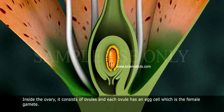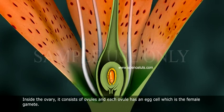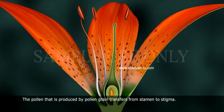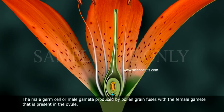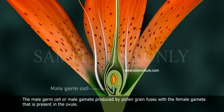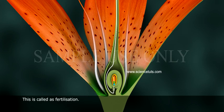Inside the ovary, there are ovules, and each ovule has an egg cell which is the female gamete. The pollen produced by the pollen grain transfers from stamen to stigma, moves through the style, and reaches the ovary. The male gamete produced by the pollen grain then fuses with the female gamete present in the ovule. This is called fertilization.